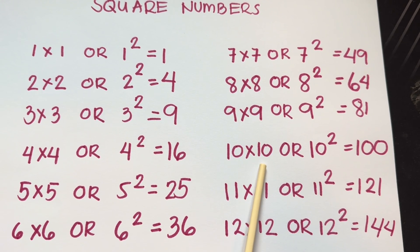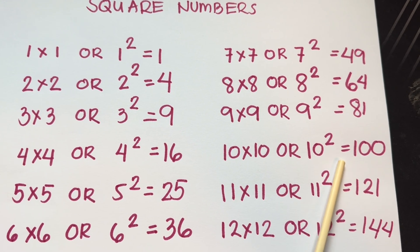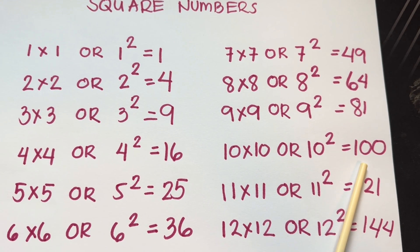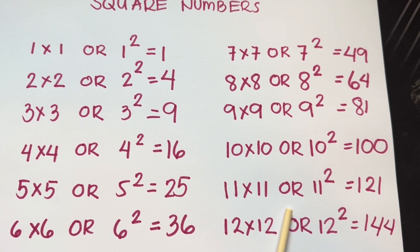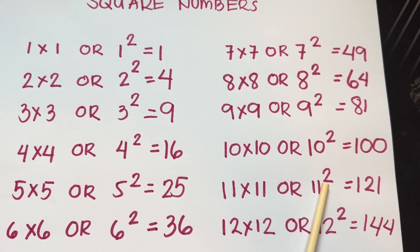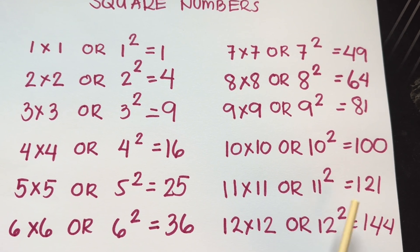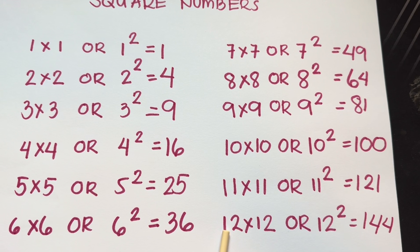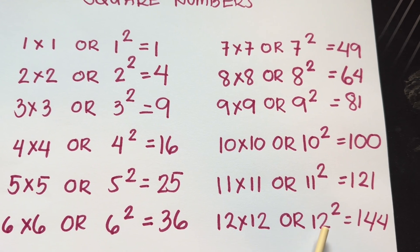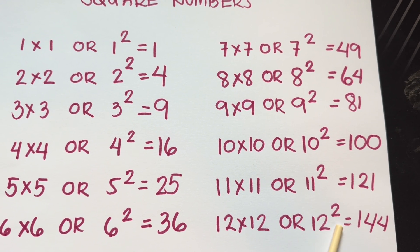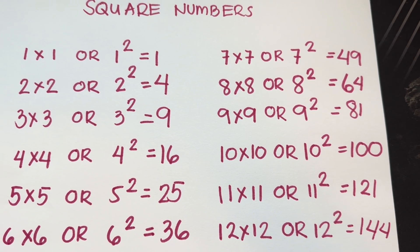10 times 10, or 10 squared, is equals to 100. 11 times 11, or 11 squared, is equals to 121. And lastly, 12 times 12, or 12 squared, is equals to 144.